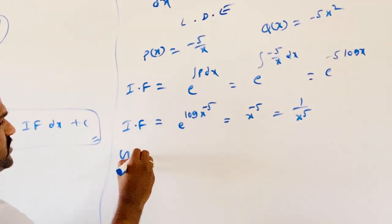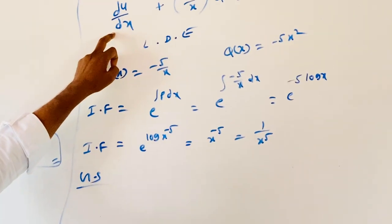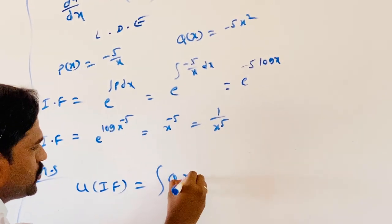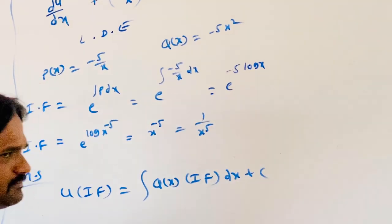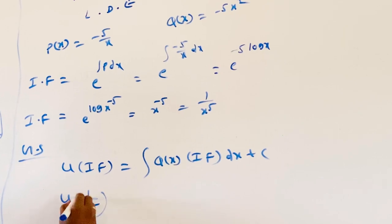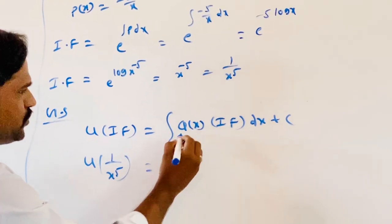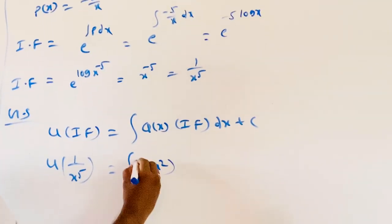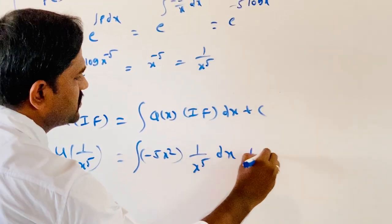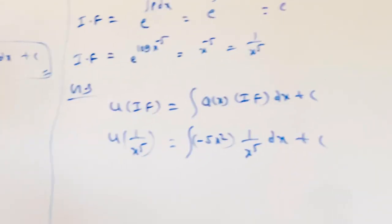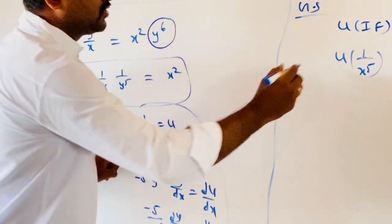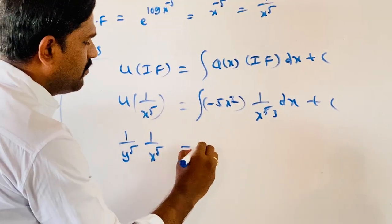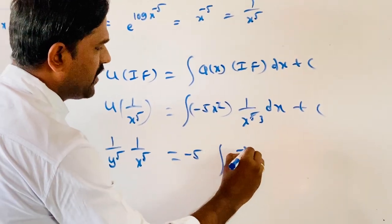The general solution is u times IF equals integral of Q(x) times IF dx plus C. So u times 1/x⁵ equals integral of (−5x²)(1/x⁵) dx plus C. This simplifies to the integral of −5·x^(−3) dx plus C, giving −5·x^(−2)/(−2) plus C.